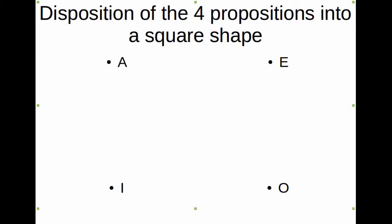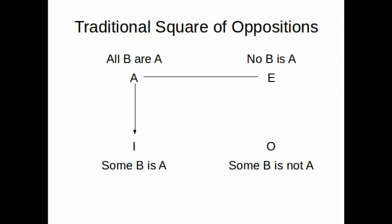Aristotle's followers have traditionally laid down the four types of proposition in a square, known as the traditional square of oppositions. We see that at the four corners of the square, we have the A proposition, the E proposition, the O proposition, and the I proposition.